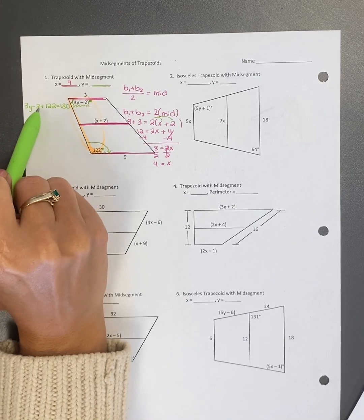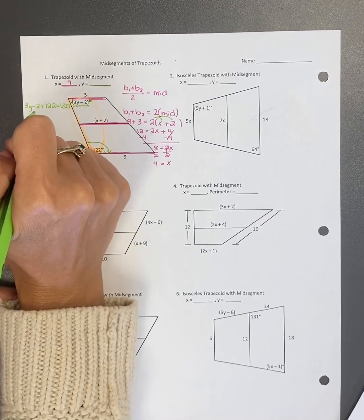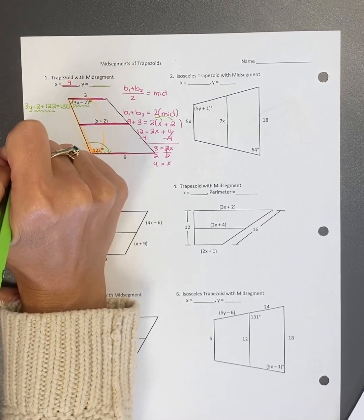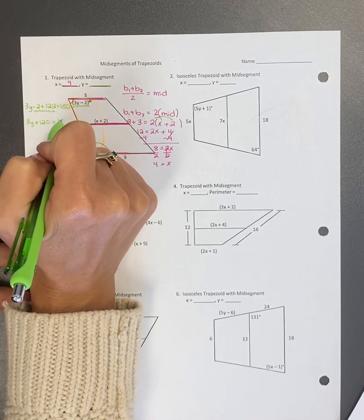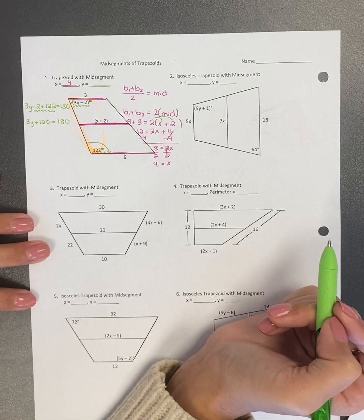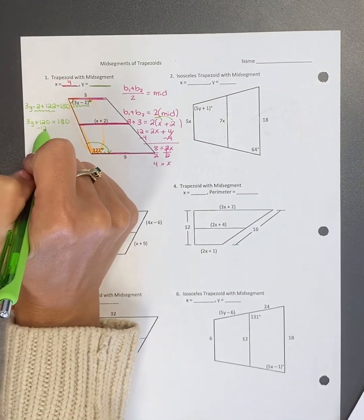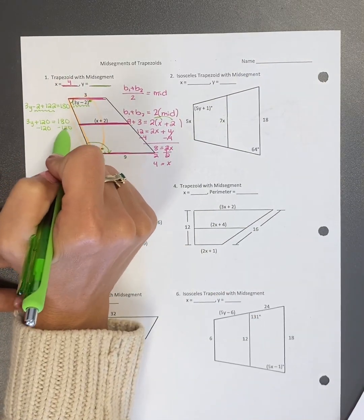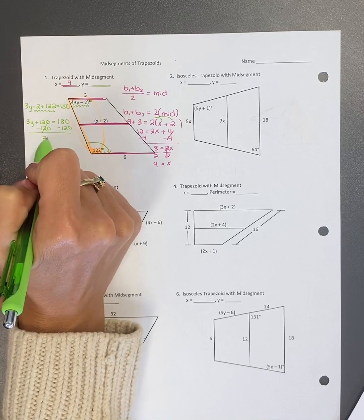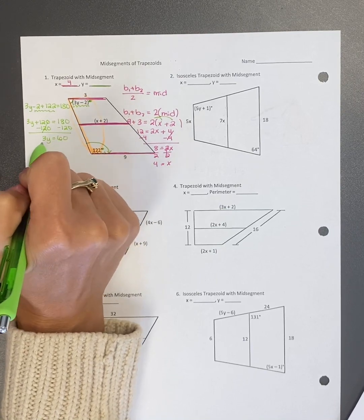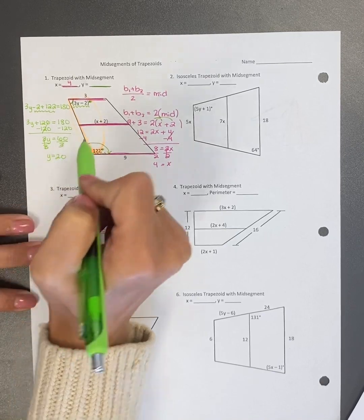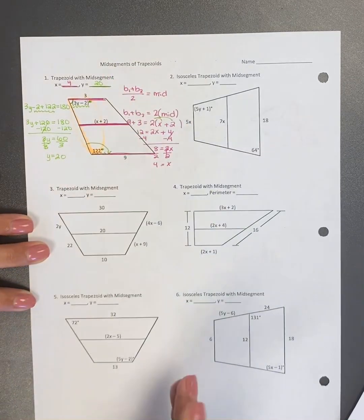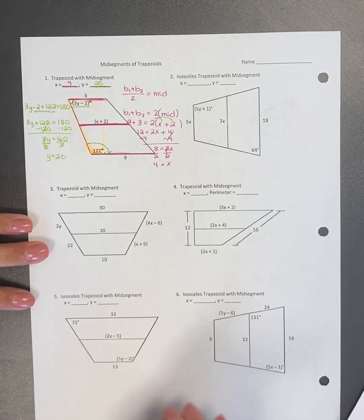So if I can combine like terms, negative two plus 122 is 120, which equals 180. And now I can minus 120 to both sides because it's a two-step equation. And then I can divide by three. So I get Y equals 20. So using that same method, you can do the other problems.